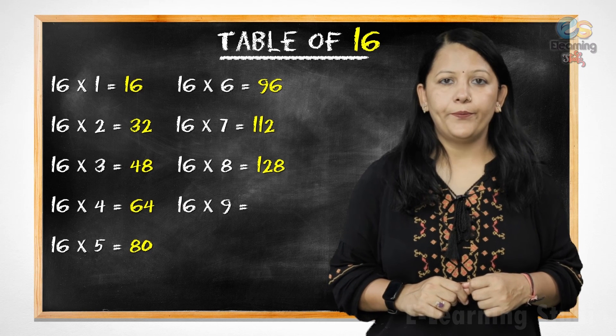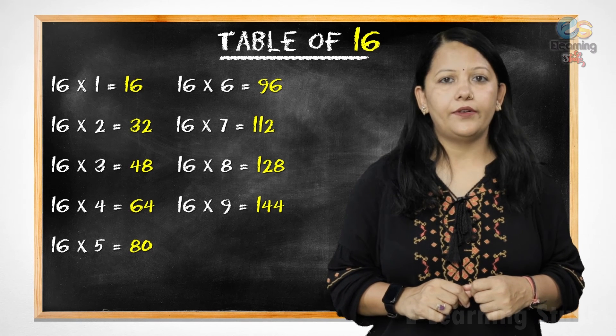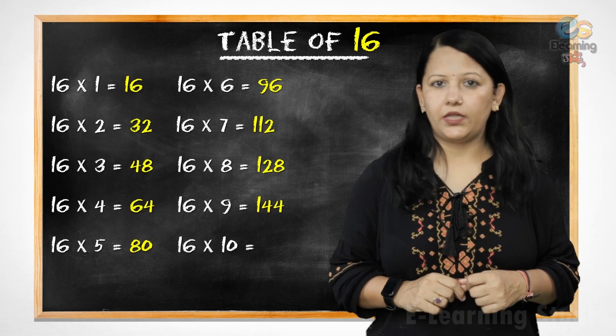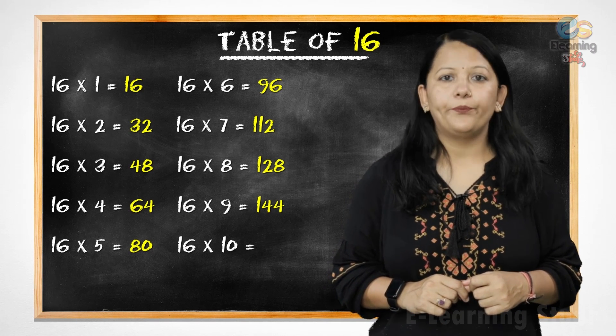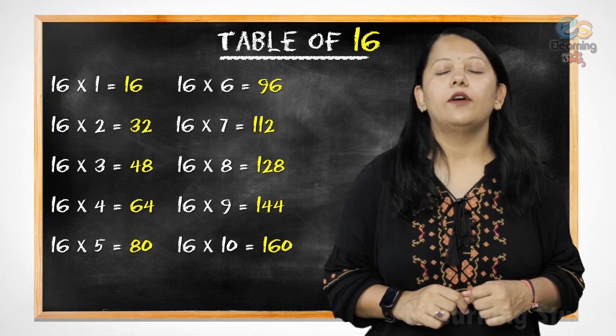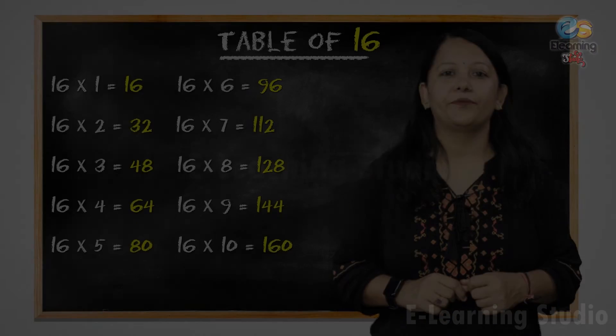16 nines are 144, 16 tens are 160. Very good.